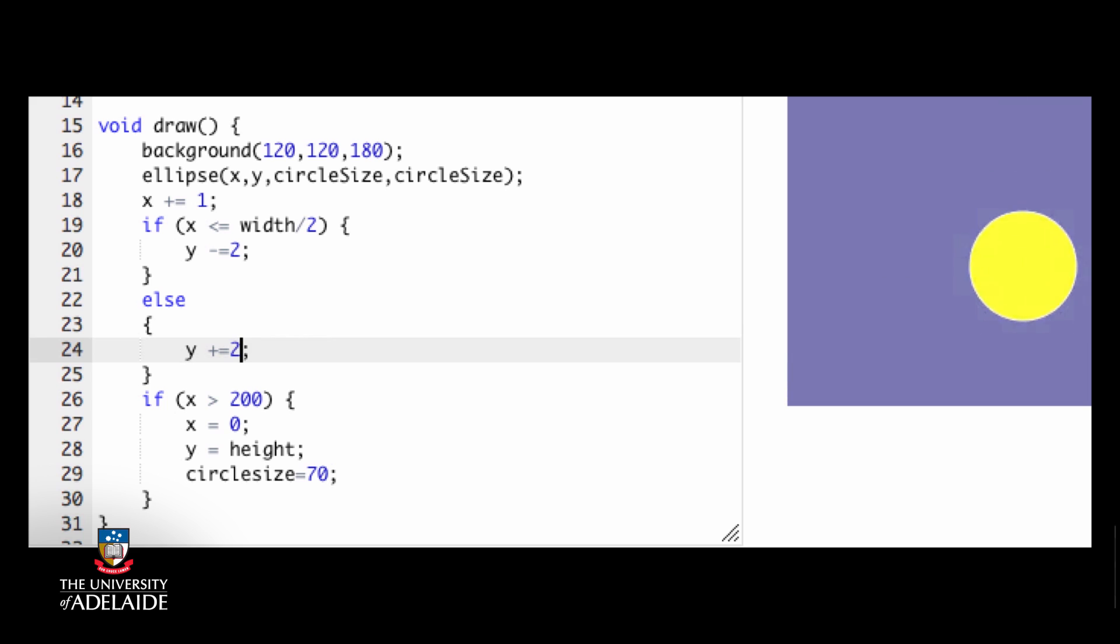Note carefully that to get the effect we want, we check to see where we are in our movement across the screen. The sun rises, drops y value until we get to the middle of the screen, and then it sets again.